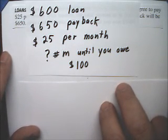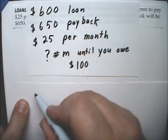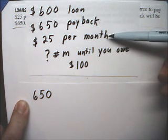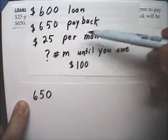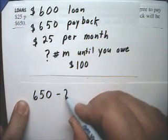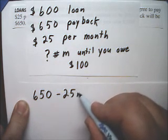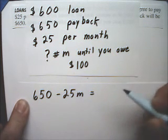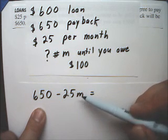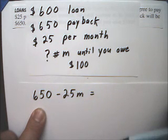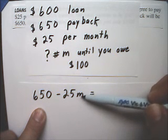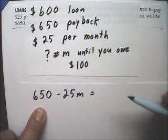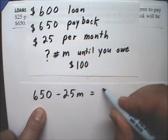So, to get the amount you owe, we're going to start with $650 and subtract all of your payments — subtract $25m — and this equals how much you owe. After the first month, you've paid $25, so you still owe $625. After two months, you've paid back $50, so you'll owe $600. The question is: how many months until this comes all the way down to $100?